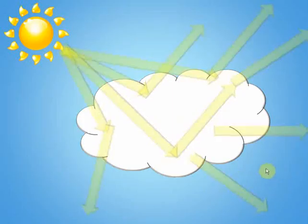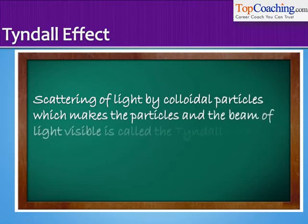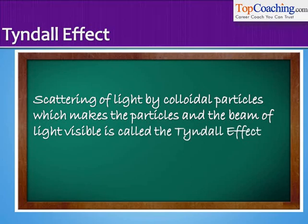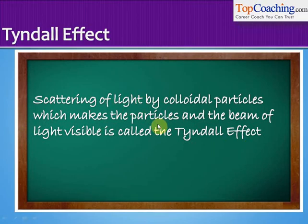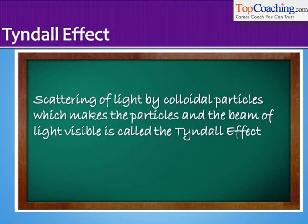You have already studied scattering in class 9th. We had studied the Tyndall effect: a specific kind of scattering of light by colloidal particles, which makes the particles and the beam of light visible, is called the Tyndall effect. So it is a special type of scattering in which light strikes colloidal particles of a certain specific diameter, and when it gets scattered, that effect is the Tyndall effect.